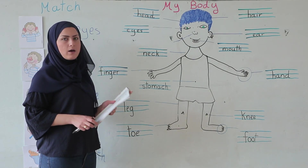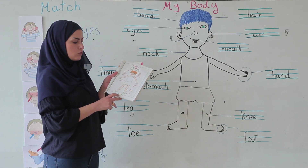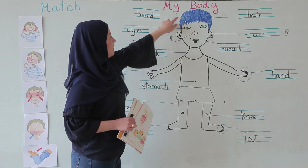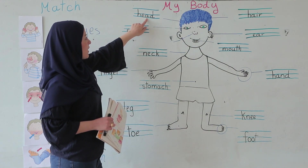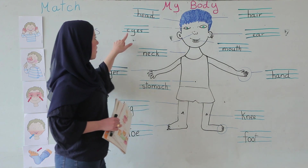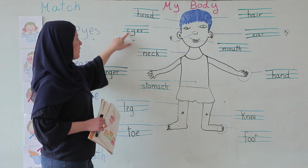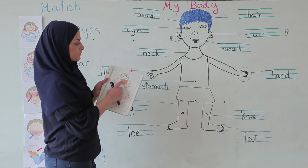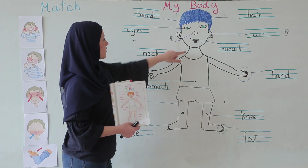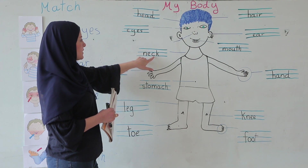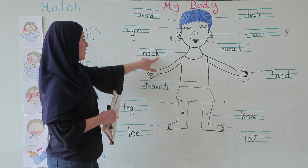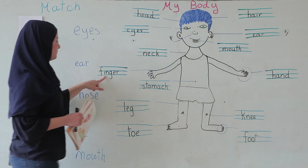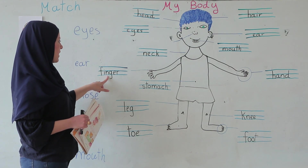Hello, today we will talk about 'My Body', page 23. Head — H E A D. Eyes — E Y E S. This is the eyes. Neck — N E C K. This is the neck.